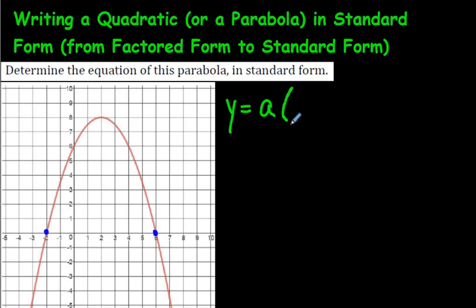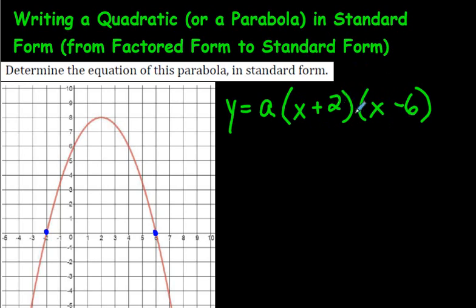Looking at the graph, the two x-intercepts are at positive 6 and negative 2. In factored form, you write the opposite of each zero: for negative 2 you write (x + 2), and for positive 6 you write (x - 6). So our factored form equation is y = a(x + 2)(x - 6). To find the value of a, we need another point — if we know one point on the parabola, we can substitute in and solve.